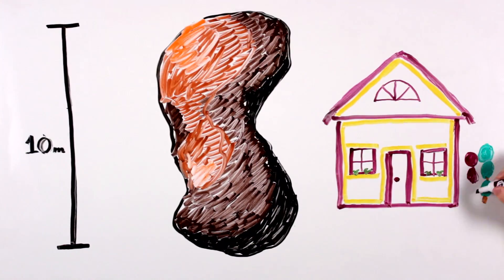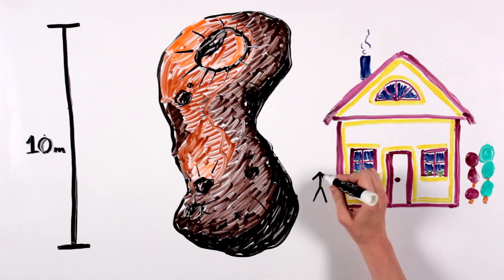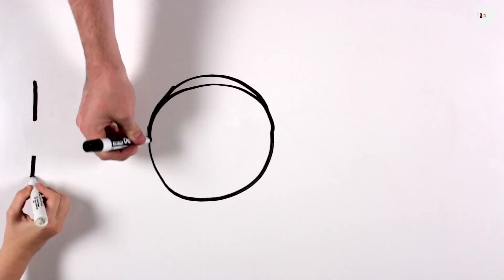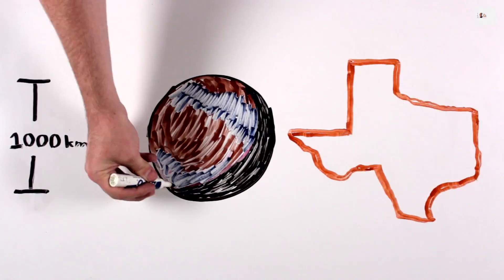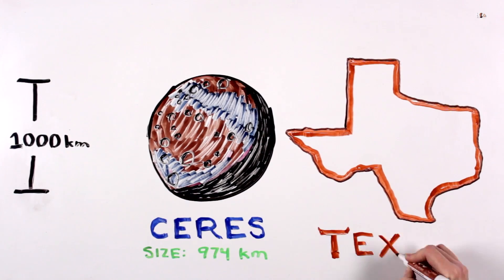First, what are asteroids? Asteroids are space rocks that range in size from a few meters up to almost a thousand kilometers in diameter, like Ceres, which is so large that it is also called a dwarf planet.